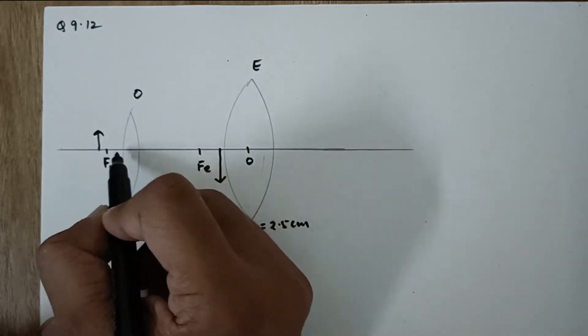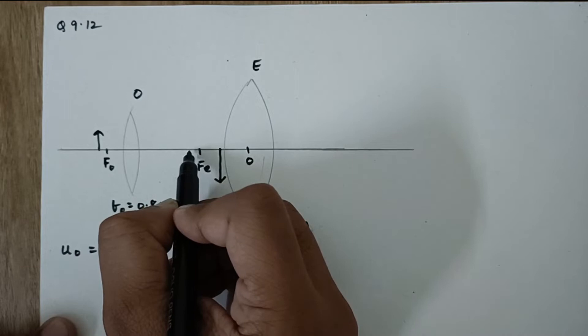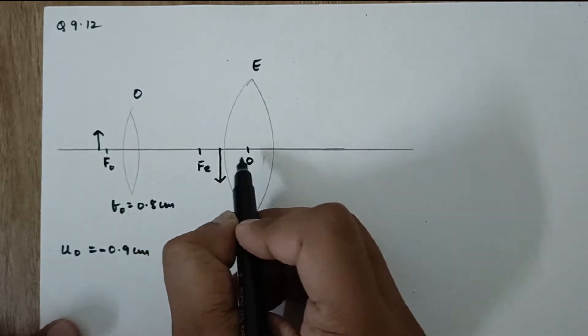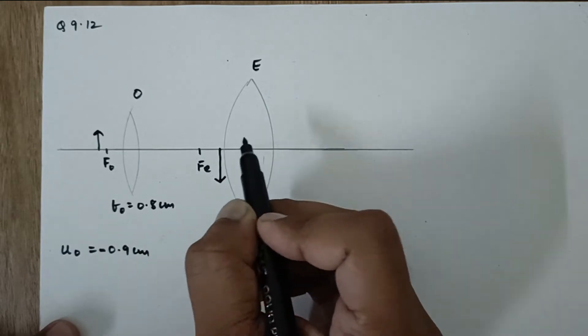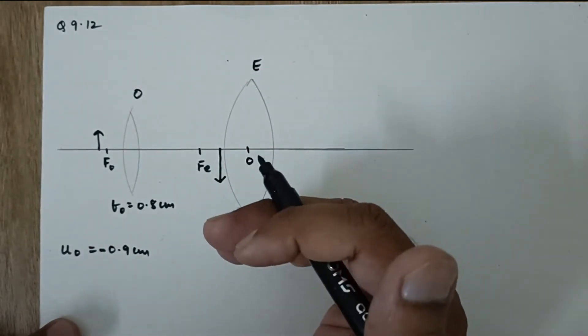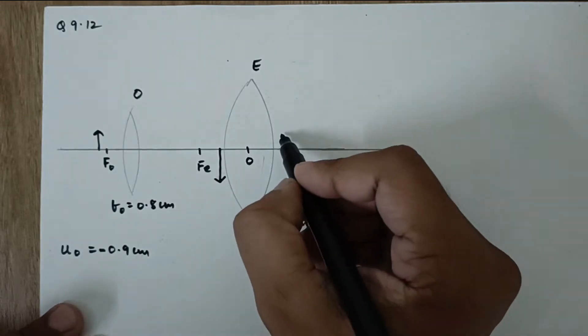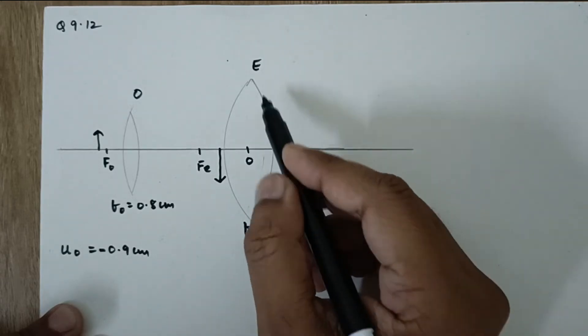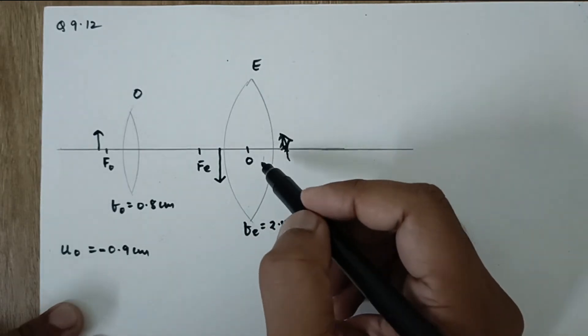So again somewhere over here it will be the FO. So twice of FO over here and the final image over here. Now this image is formed between O and FE which behaves as the object for this lens and the final image is formed at D. How would I know? Because in the question they have said that the observer's eye is always very near to the eyepiece.